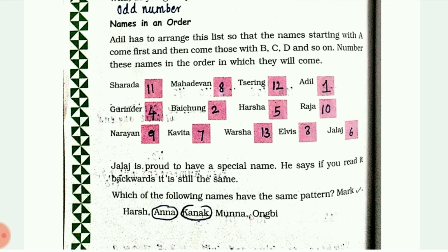C and D - we don't have any names there. Then L is number 3. F we don't have anything. G - I have written 4. Then Harshita, then Harsha - number 6. Then Jalaj is 7, then Kavita. H, I, J is Jalaj; K is Kavita - number 7. Then Mahadevan is 8, Narayan is 9.